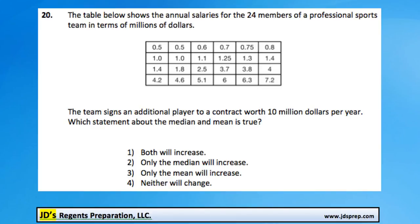This is problem number 20 from the June 2015 Algebra Regents exam. In this question we've got a table showing the annual salaries for 24 members of a professional sports team in terms of millions of dollars. It says the team signs an additional player to a contract worth $10 million per year. Which statement about the median and mean is true?